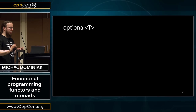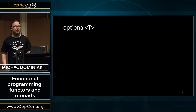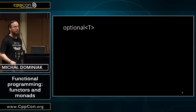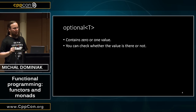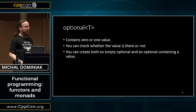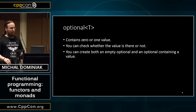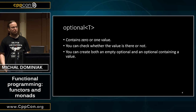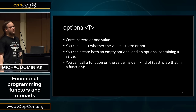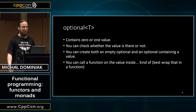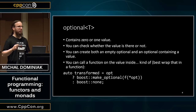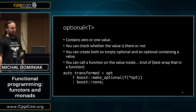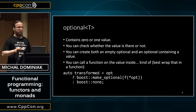So we have this beautiful type called optional. There is one in Boost, and one proposed — I think accepted — for the standard. So it contains either no value or a value. You can check whether the value is there or not. You can create an empty optional — that's the default constructor. You can create an optional containing a value, that's called make_optional. You can call a function on the value inside, although that's not functionality given out of the box. It looks something like this: we check whether the optional is engaged, and if it is, you call the function on the dereferenced optional; otherwise you return nothing.